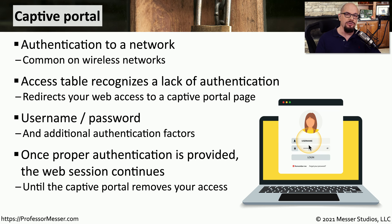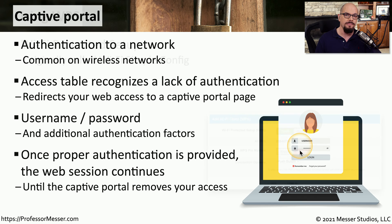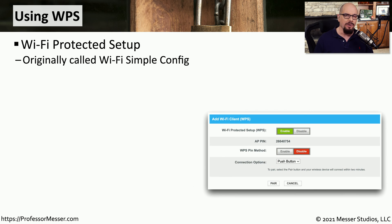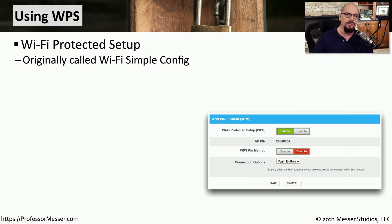Once that initial session expires, you'll need to reconnect to the captive portal, add your credentials again, and then you'll be connected for the next interval. As you can see, there are a number of configuration settings inside an access point that have to be enabled or disabled depending on the type of protection you want. You also have to make sure that whatever configuration you have for the access point is configured the same way on your wireless clients.